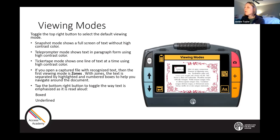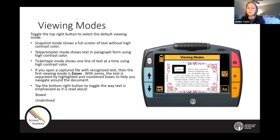There's also a button on the right-hand side — the button below the viewing modes button — where you can toggle between boxed or underlined text highlighting. However you want to emphasize and highlight your words as you read them, you can choose a box or an underline. I'll switch back to my Juno and do a quick demonstration of those different reading views.